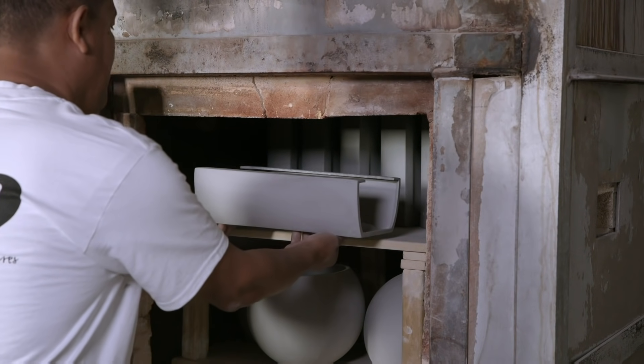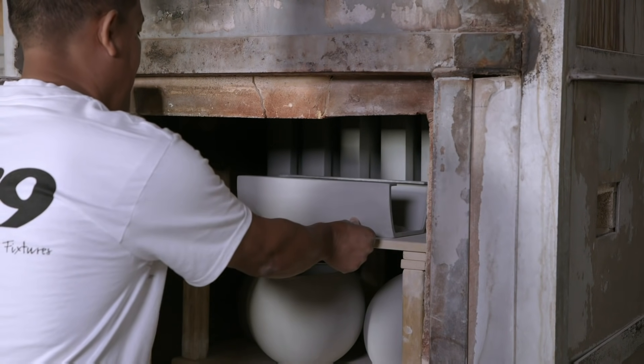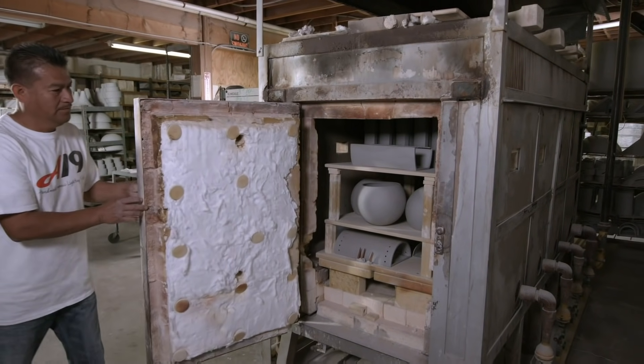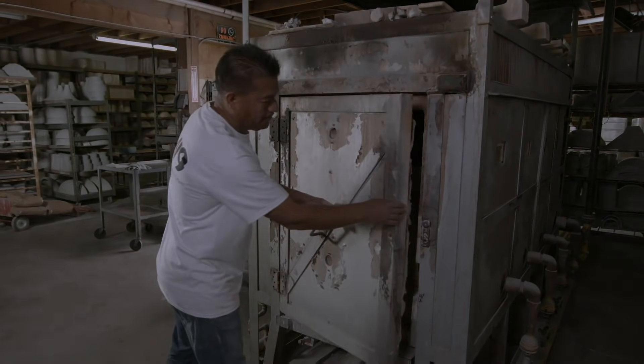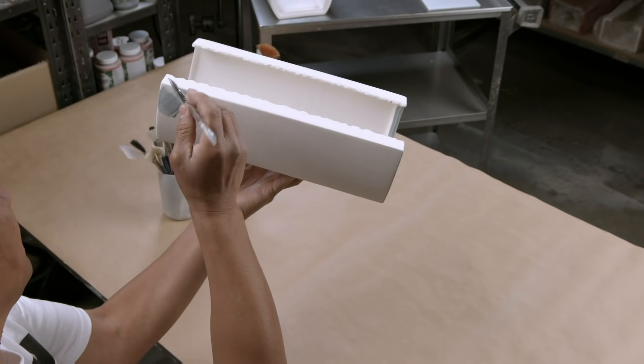The clay casing now spends eight hours in a kiln, exposed to a temperature of over a thousand degrees Celsius. This transforms the clay into ceramic.